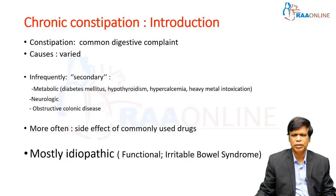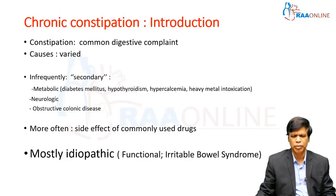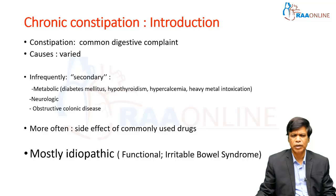For example, it could be secondary to endocrine problems or due to heavy metal intoxication like lead poisoning. They may be secondary to central, peripheral, or spinal cord neurological problems. And more importantly, they could be secondary to obstructive colonic disease - for example, left-sided colonic cancer or diverticular stricture.